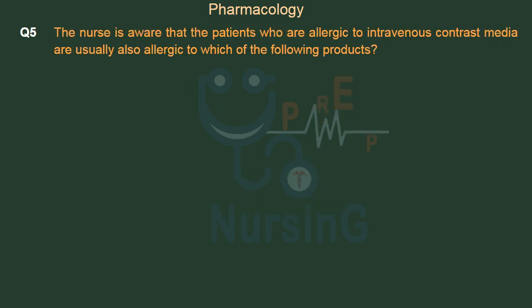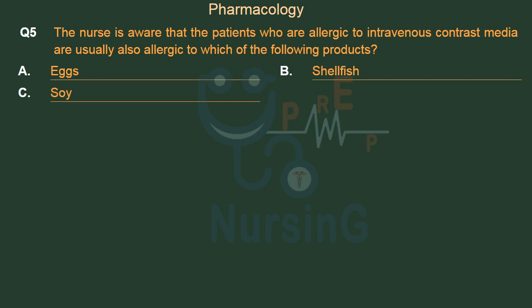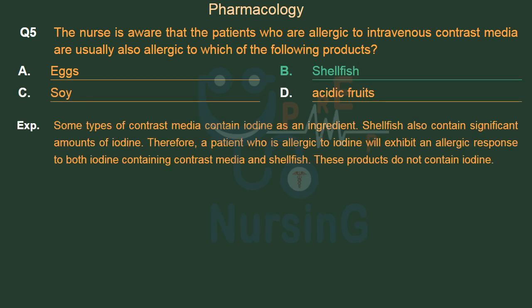The nurse is aware that patients who are allergic to intravenous contrast media are usually also allergic to which of the following products? Option A: Eggs. Option B: Shellfish. Option C: Soy. Option D: Acidic fruits. The right answer is Option B: Shellfish. Some types of contrast media contain iodine as an ingredient. Shellfish also contains significant amounts of iodine. Therefore, a patient who is allergic to iodine will exhibit an allergic response to both iodine-containing contrast media and shellfish.